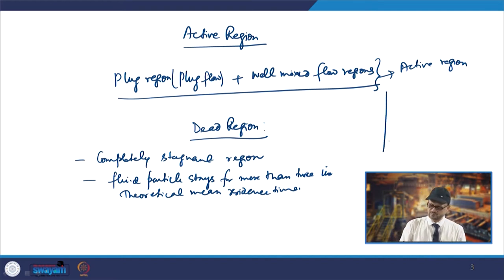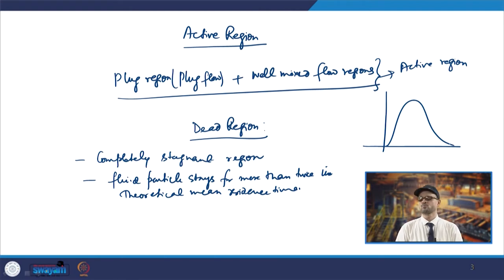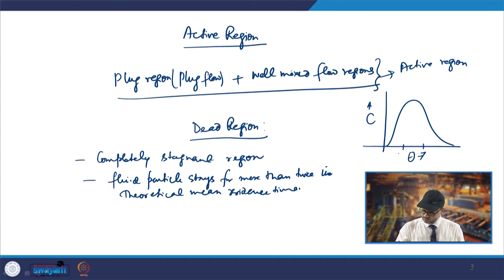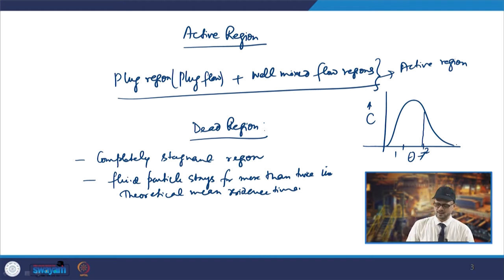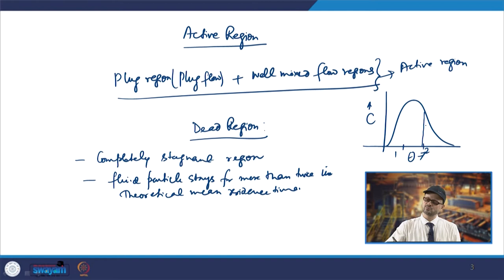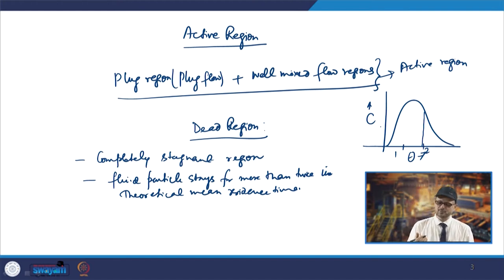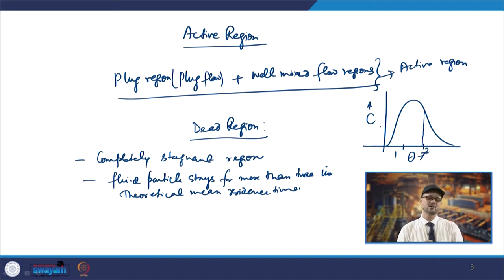Looking at a typical C-curve plotted against dimensionless time θ, if you mark θ = 1 and θ = 2 on the x-axis, the liquid particles staying beyond θ = 2 correspond to the dead region. The region up to θ = 2 is called the active region, while the tail beyond θ = 2 is indicative of the dead region.